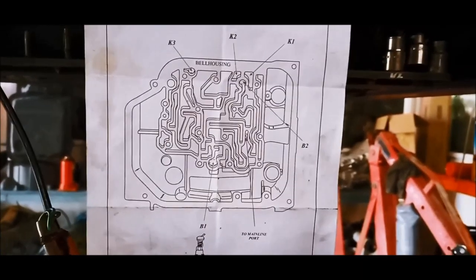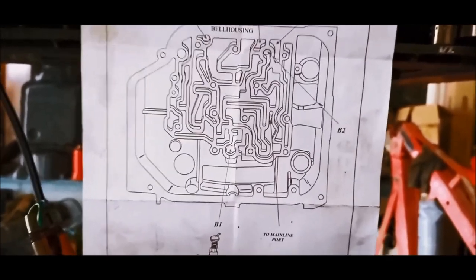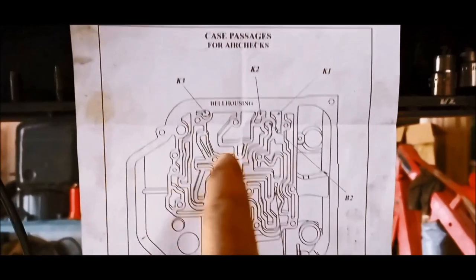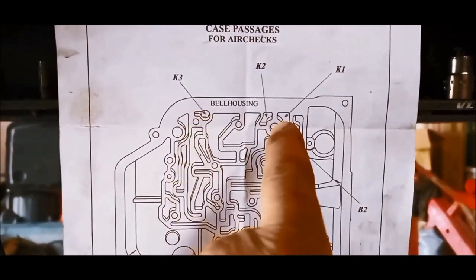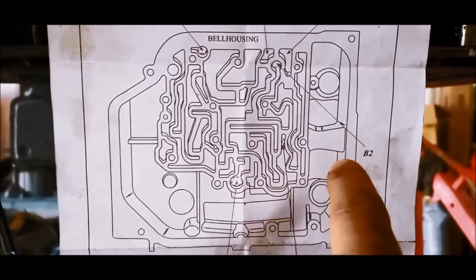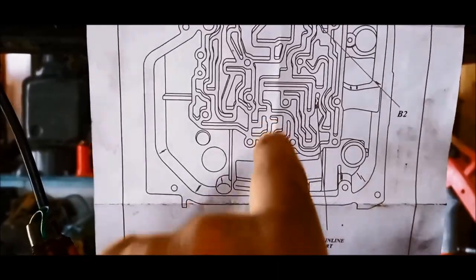And here we have the ATSG diagram for the case pressure passages or ports. And here are the locations where to check K clutches: K1, K2, K3, your brake which is also a clutch, B2 and B1.